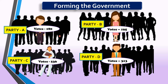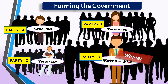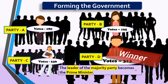For example, I have taken four political parties — Party A, B, C and D. Party A got 180 votes, Party B got 195 votes, Party C got 236 votes, and Party D got 313 votes. So Party D will get the chance to form a government because they got the most votes — they will be the winner. Then the President, who is the head of our country and the first institution of the country, will invite the leader of this party and appoint them as Prime Minister of the country.